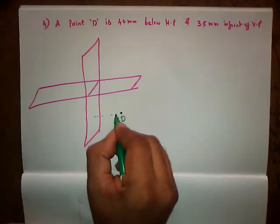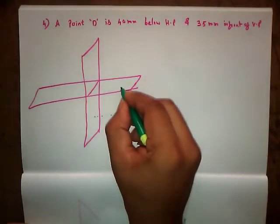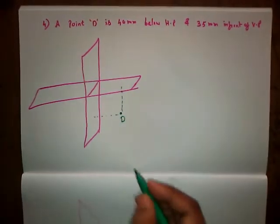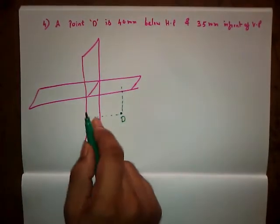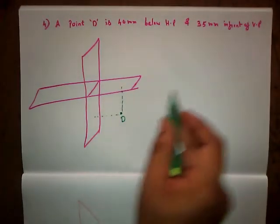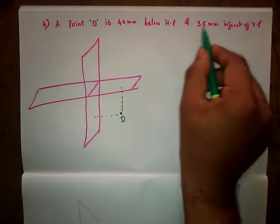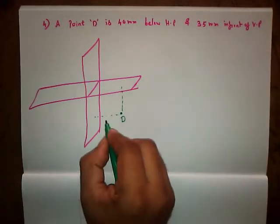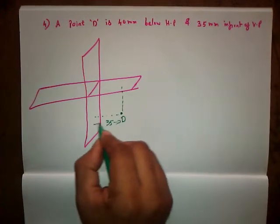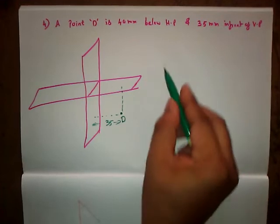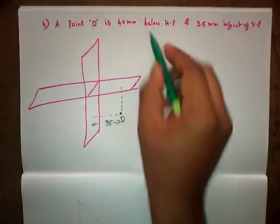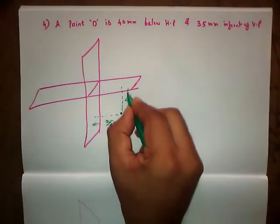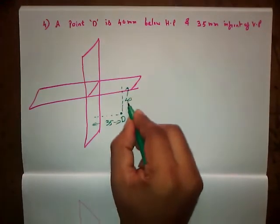Let us keep the dotted lines. From VP, what is the distance? 35 mm from VP. So this is 35 mm. And from HP, what is the distance? 40 mm.